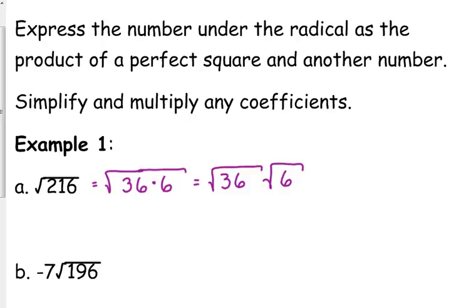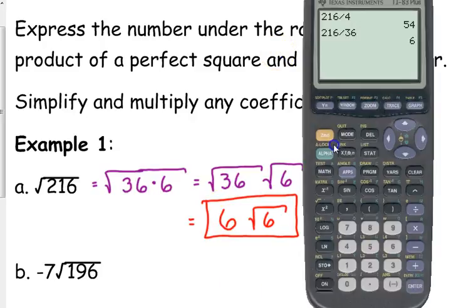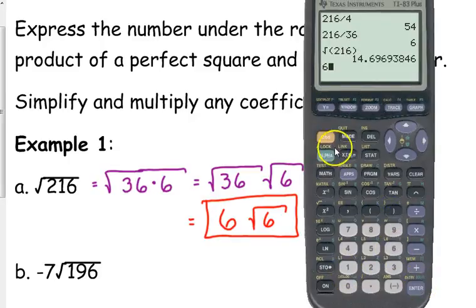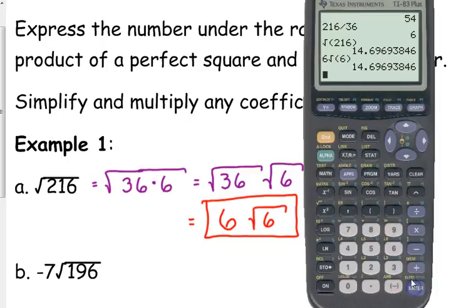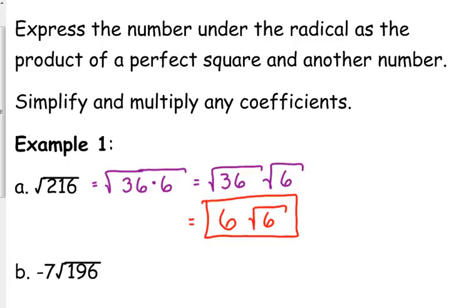When you have a product under a radical, you can rewrite that as the product of two radicals. So the square root of 36 times the square root of 6, and the square root of 36 is 6, so that radical is gone. We cannot break down the square root of 6 anymore because it's not divisible by another perfect square. So 6√6 is equivalent to √216. It won't tell you if you simplified everything fully, but you can at least check and see if your answer is equivalent to the original radical by getting the decimal form of each one and confirming that those have the same decimal value.